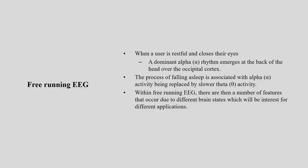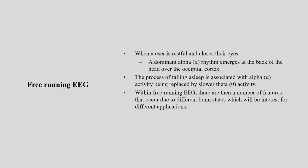When a user is restful, eyes closed, a dominant alpha rhythm emerges at the back of the head over the occipital cortex. The user is awake but with eyes closed — in that situation, the alpha wave is in a dominating state. In the process of falling asleep, the alpha wave activity is gradually replaced by the slower theta wave.